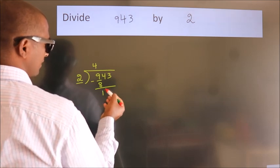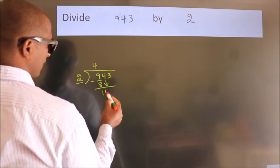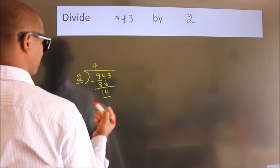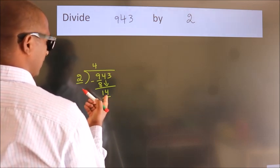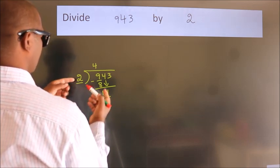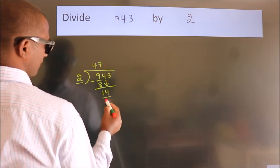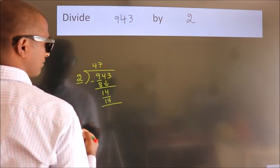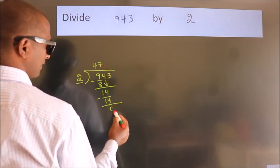After this, bring down the beside number. So, 4 down. So, 14. When do we get 14? In the 2 table, 2 7s 14. Now, we subtract. We get 0.